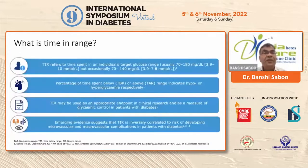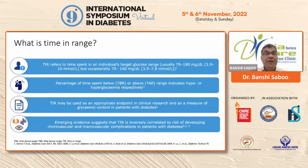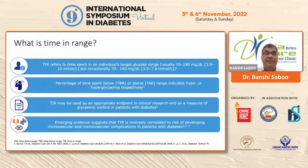The novel metric is time in range. Time in range refers to the time spent within an individual's target glucose level — that is between 70 to 180 mg/dL. For tight glycemic control in hyperglycemia during pregnancy, it should be between 70 to 140. The percentage of time spent below that is time below range, and time above range refers to the percentage of time above target. Time in range may be used as an appropriate endpoint in clinical research, and emerging evidence suggests it is inversely correlated with risk of microvascular and macrovascular complications.